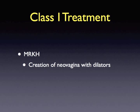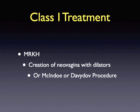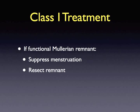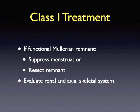If vaginal dilators are unsuccessful, then a neovagina may be created surgically using either the McIndoe or the Davidov procedure. If a functional Müllerian remnant is present, menstruation should be suppressed and surgical resection of the Müllerian remnant completed, preferentially with laparoscopy. Also, evaluation of the renal and axial skeletal systems should be completed.